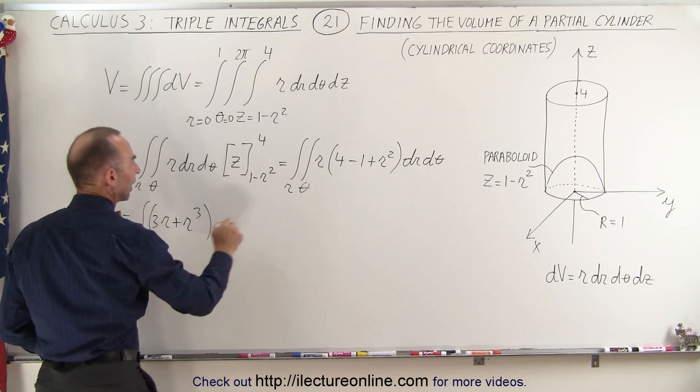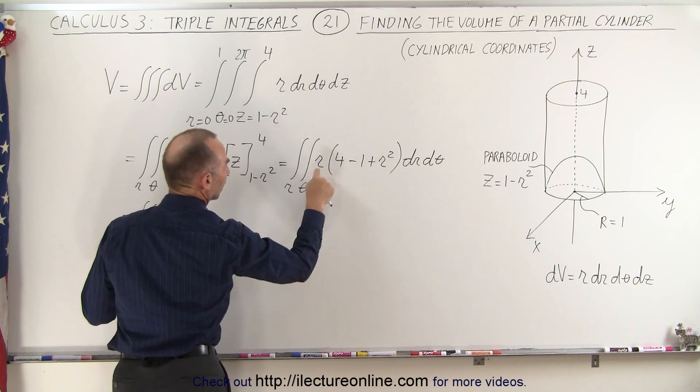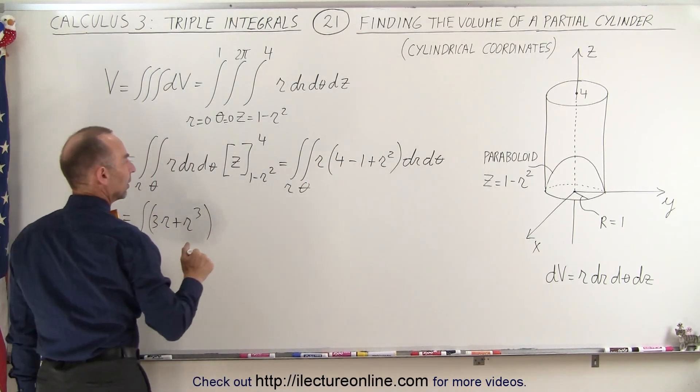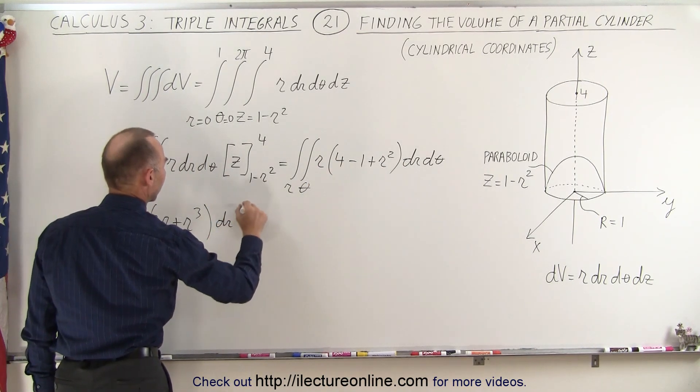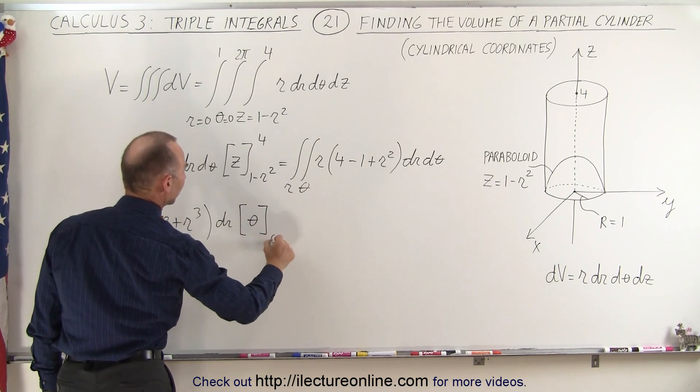So we have 4 minus 1 is 3 times r. And r squared times r is r cubed times dr. And dθ is integrated, becomes θ, evaluated from 0 to 2π.